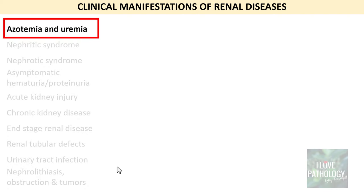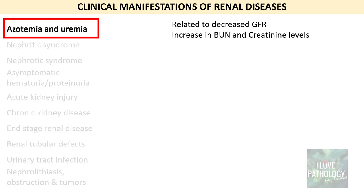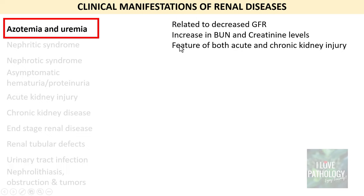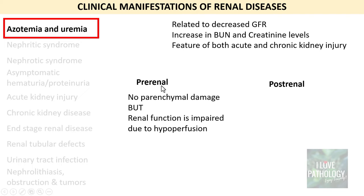The first is azotemia and uremia. Azotemia is basically related to a decrease in glomerular filtration rate. By definition, azotemia is an increase in blood urea nitrogen and creatinine levels. Azotemia is a feature of both acute and chronic kidney injury.